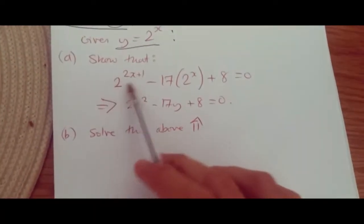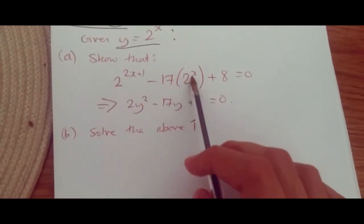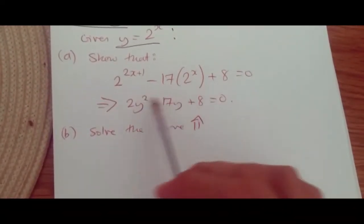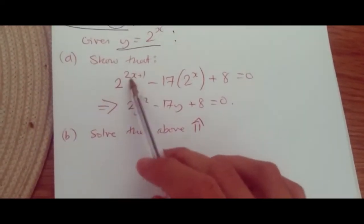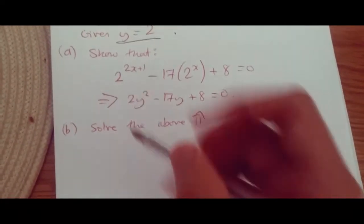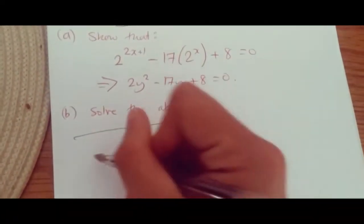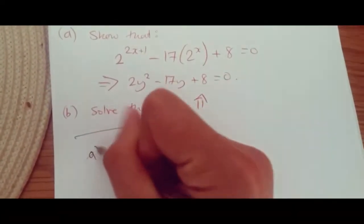Well firstly, let's look at the first term here. We know this one is obviously going to be y — we can see it. How do we make this 2y squared? We need to know our rules of indices. So let's look at part a.